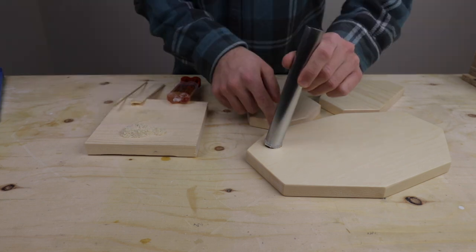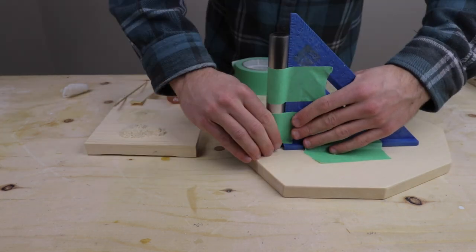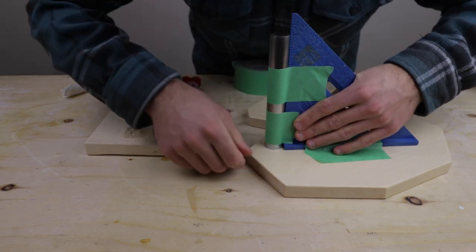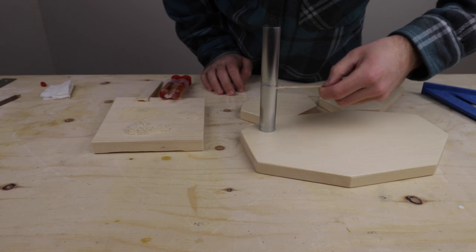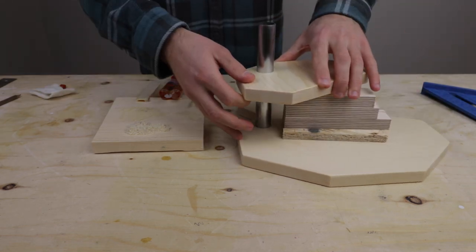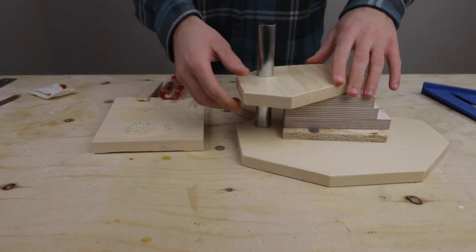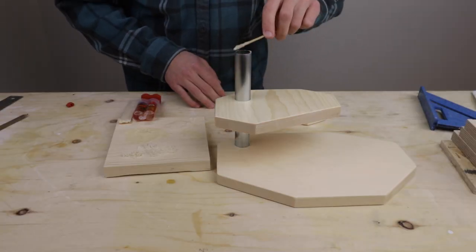Then it was time for final assembly. I mixed up some more epoxy and used a framing square to help set the conduit at 90 degrees. Once that had cured, I used a spacer that I made off camera to help hold the second shelf in place. Then I could epoxy the third shelf into place.